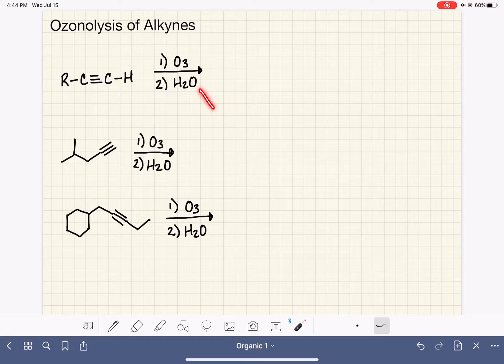Notice that the reagents are slightly different for the ozonolysis of an alkyne. With an alkene, our step two is dimethyl sulfide, DMS, or CH3-2S. But with an alkyne, we are reacting in step two with just simply water. However, the reaction is essentially the same.